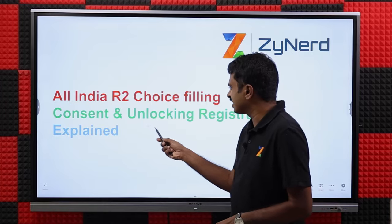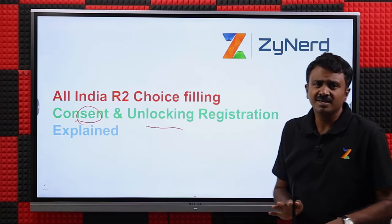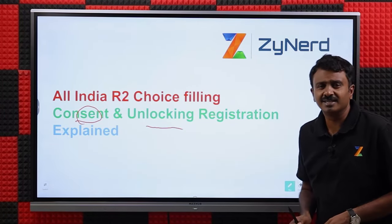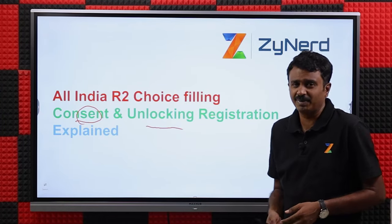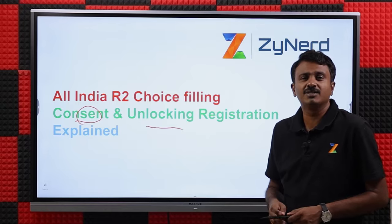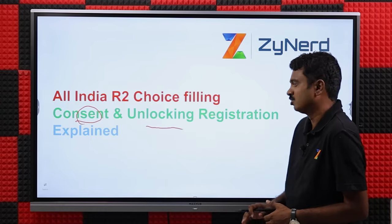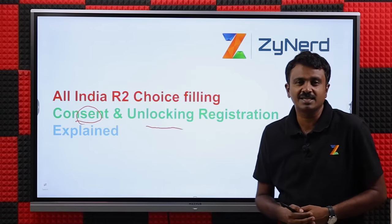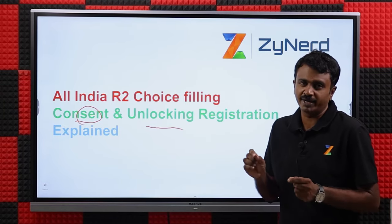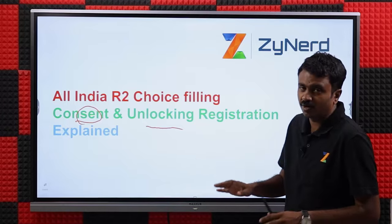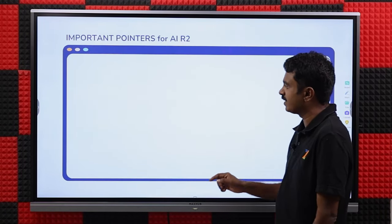These are very minor things once understood. Consent is not of great relevance at all — it is just an approval for you to go ahead, basically an acknowledgement from your end to MCC saying that you understood all the rules. Unlocking is a simple process only for those who want to change quota and category, so without knowing what unlocking is, don't do it.